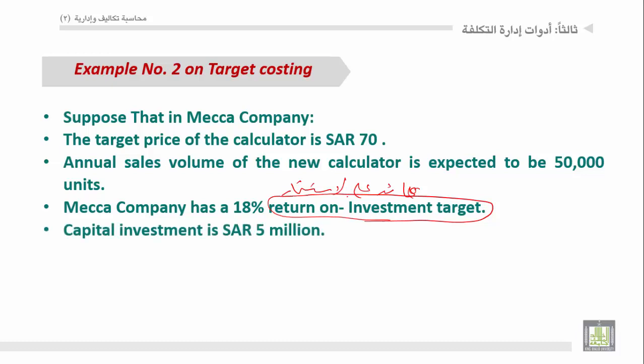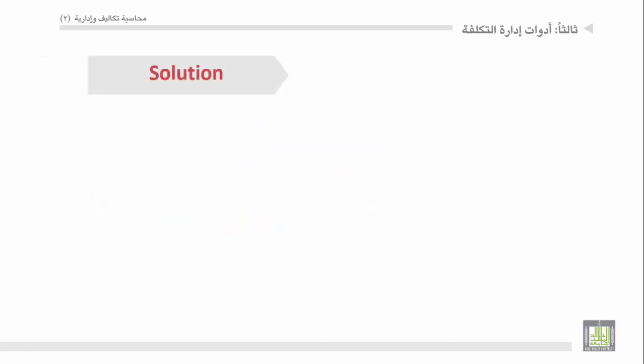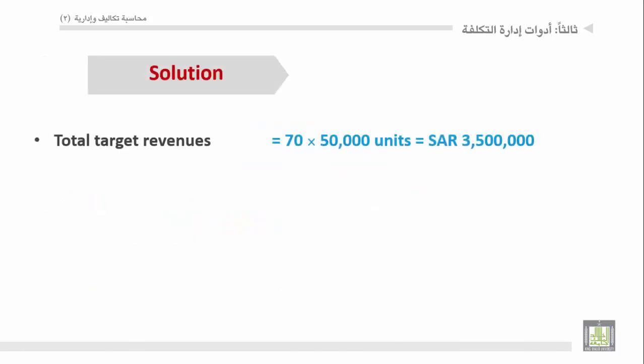Capital investment: 5 مليون ريال استثمارات S.R. Required: Compute the unit target cost per calculator. نحسب التكلفة المستهدفة للواحدة. Solution: Total target revenue = 70 × 50,000